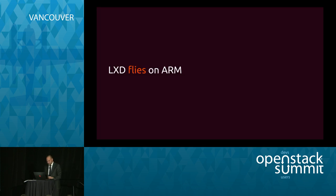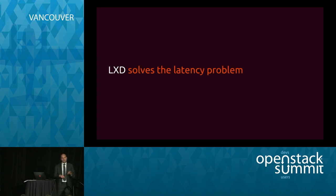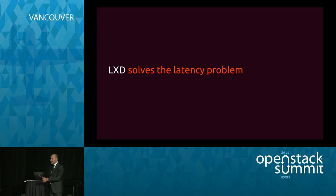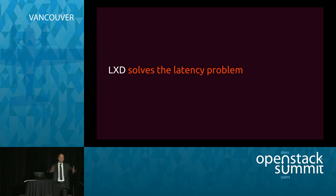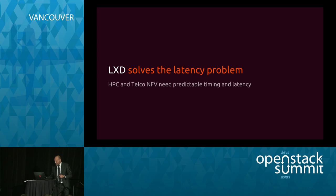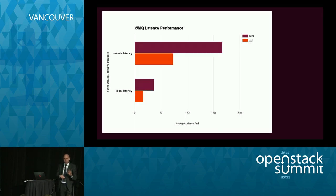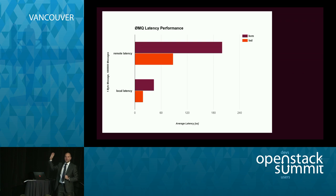LXD flies on ARM, and it also solves one of the key problems in virtualization, which is latency. For the convergence of cloud and high-performance computing, or cloud and telco NFV, we really want to solve the latency problem. It's really difficult on ESX or KVM, because you're scheduling resources to a thing which then has to schedule resources to the actual app. But with LXD, those processes are on the host metal. With LXD, the same workload — this is ZeroMQ, a latency-sensitive messaging workload — the latency is reduced by more than 50%. It's less than half the latency. Extraordinary numbers for LXD. And that, of course, all sits right next to KVM — you don't have to give up KVM.